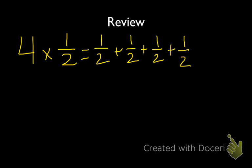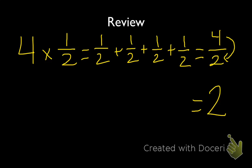Knowing that, we just add across the numerators, which is 4, and then keep the denominator the same, which is 2. So we have 4 halves. As an improper fraction, we would have 2, because we know that 4 divided by 2 is going to be 2.